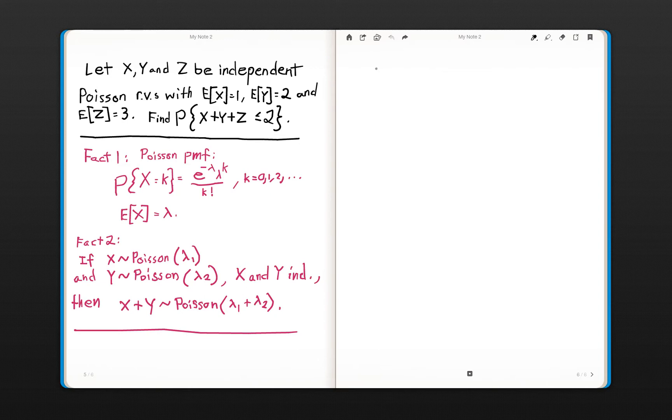We're going to use fact 2. We can generalize fact 2 to 3 variables of X, Y, Z. Essentially, what we're saying is, if each of these is independent Poisson random variables with rate 1, rate 2, rate 3, or lambda 1, lambda 2, lambda 3, because they are the expected values,